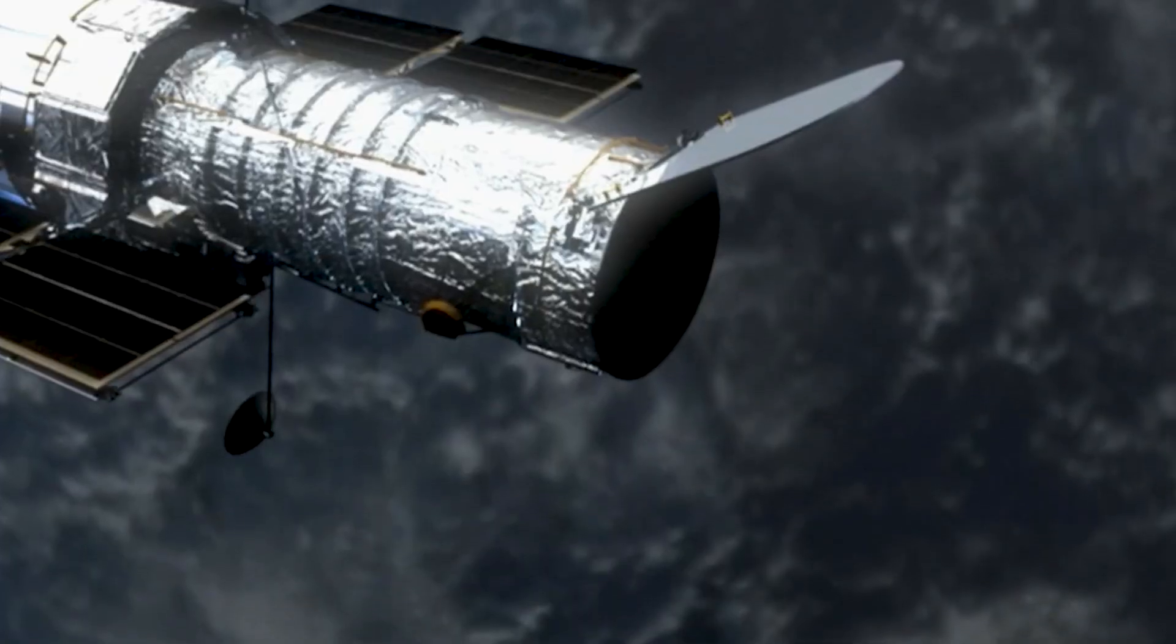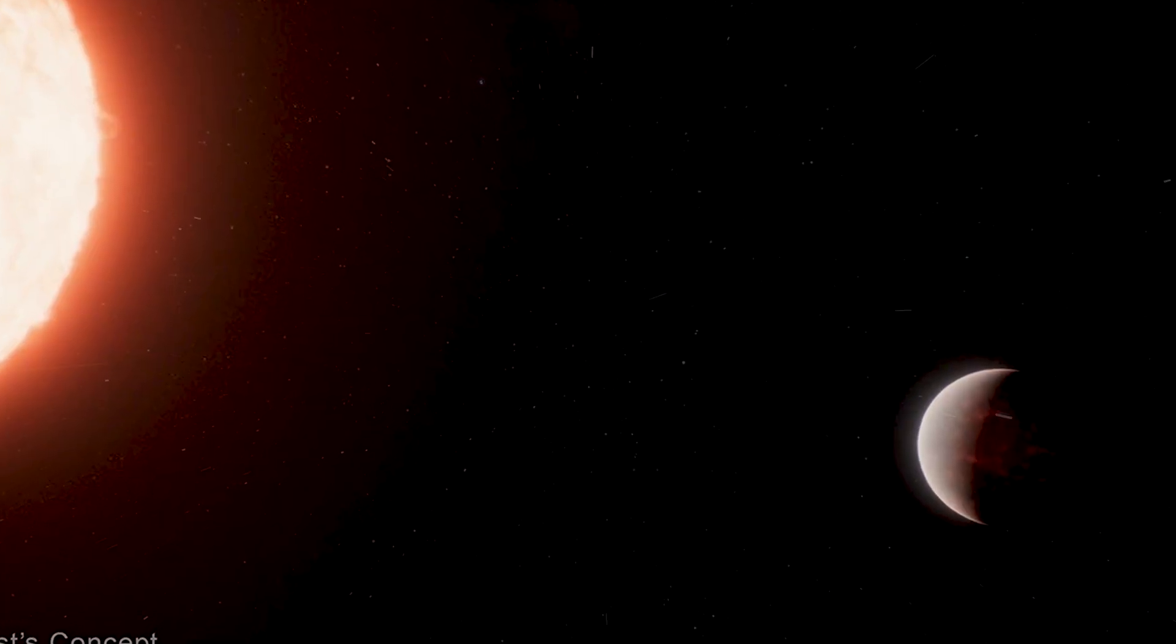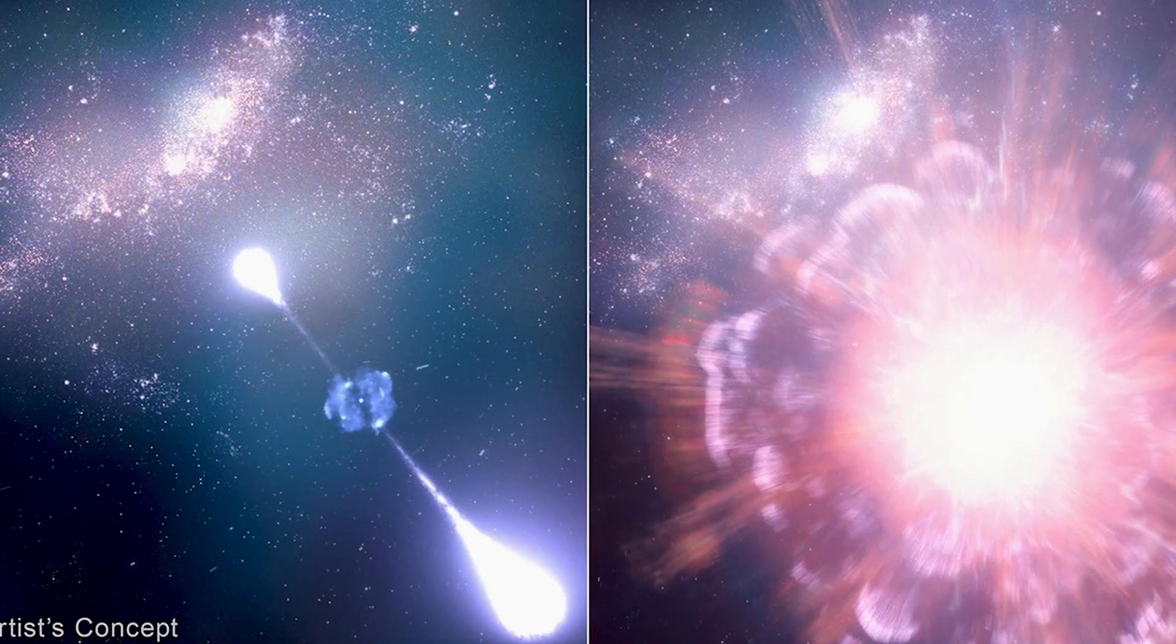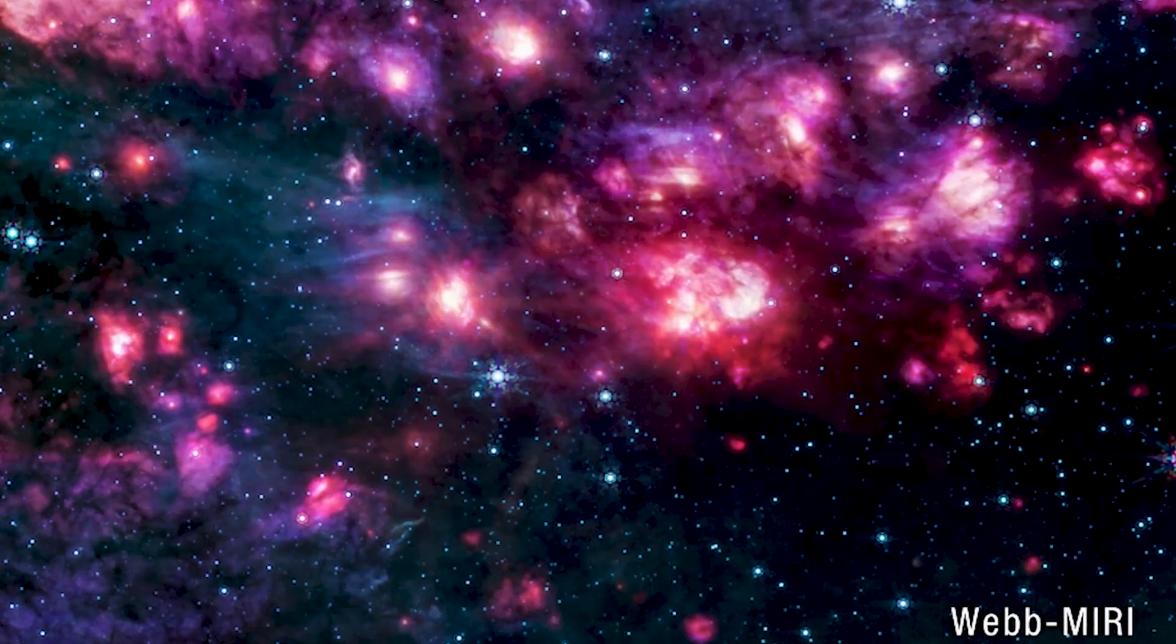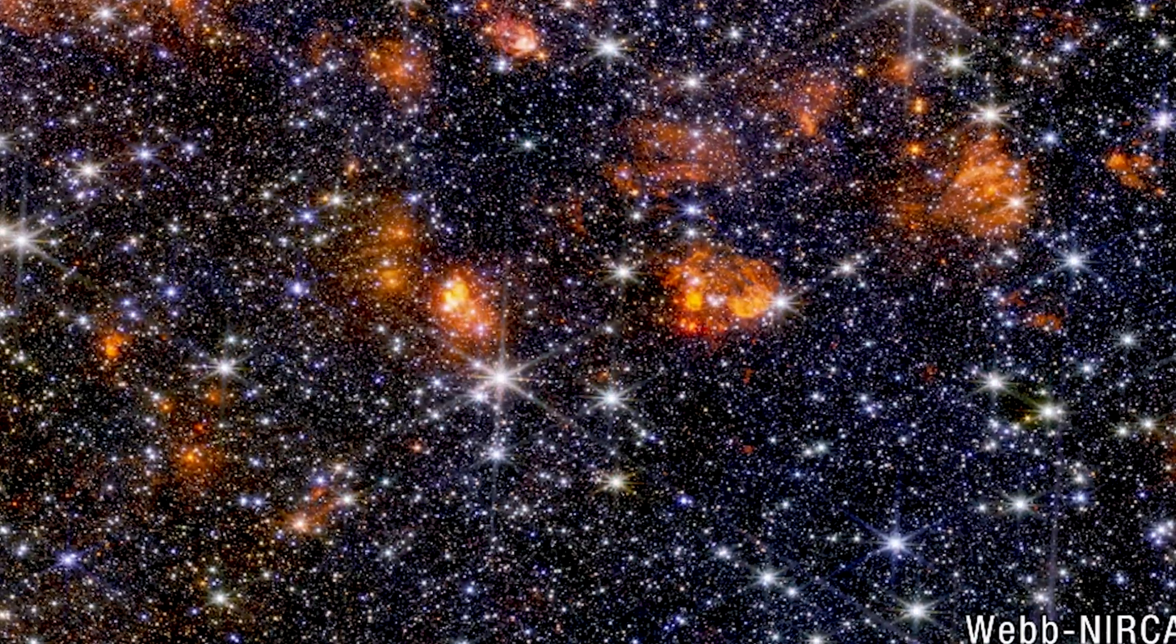James Webb is doing something no telescope before it ever could. It's watching planets that should be dead, catching stars explode at the dawn of time, and peering into clouds so dense and dark they're still forging the next generation of suns.